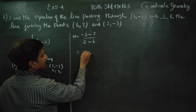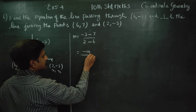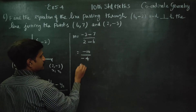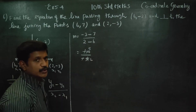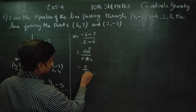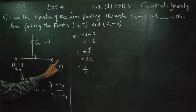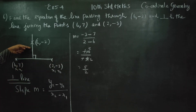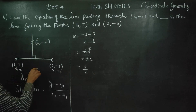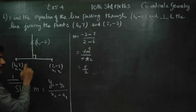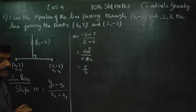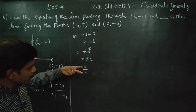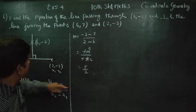That gives us minus 10 divided by 4, which simplifies to minus 5 by 2. This is the slope of the given perpendicular line. Now for the perpendicular line, it is slope — then it is the equation of the perpendicular line.